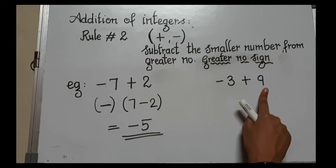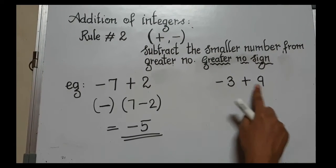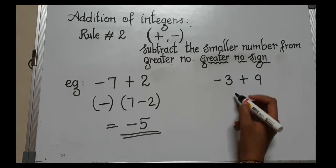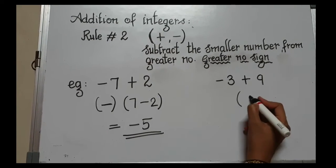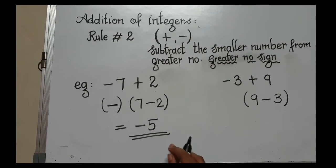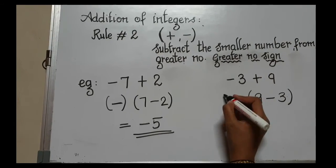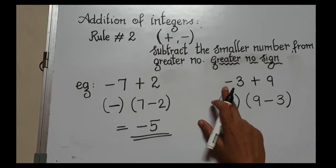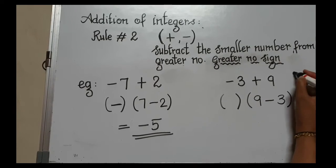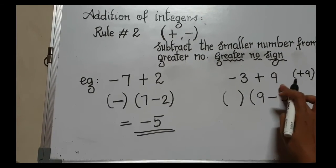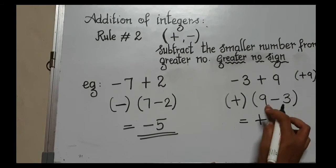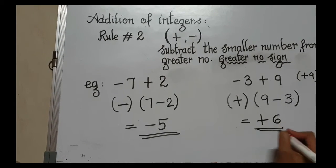Next example: minus three plus nine. You have negative three and positive nine. Same rule applies — subtract the smaller number from the greater: nine minus three. The greater number is nine, which is positive, so the sign is plus. Nine minus three is six, so the answer is positive 6.